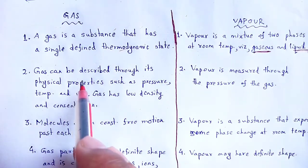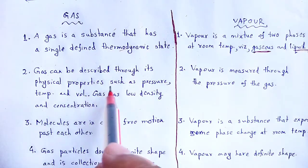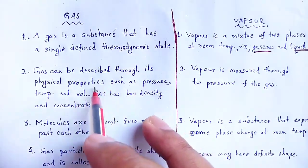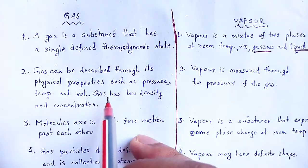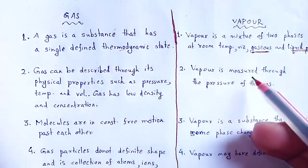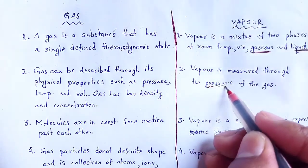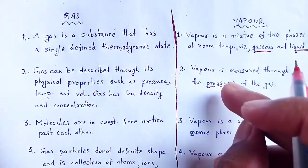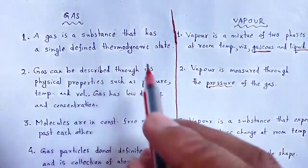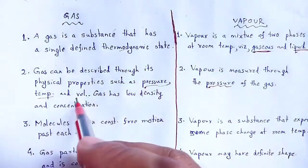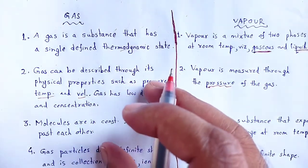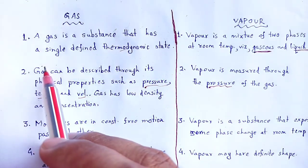Second point: Gas can be described through its physical properties such as pressure, temperature, and volume. Gas also has low density and concentration. But in the case of vapour, it is measured through pressure only. Pressure is the physical property through which we can define vapour. In the case of gas, pressure, temperature, and volume are the physical properties used to describe it.